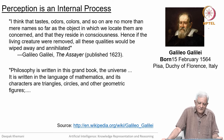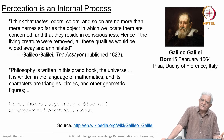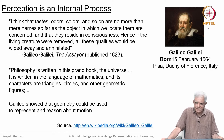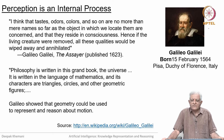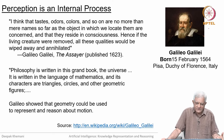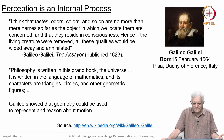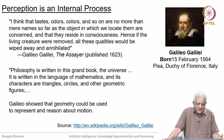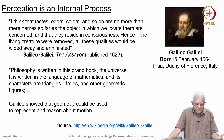Galileo said that philosophy — which in those days meant everything including science and maths — is written in this grand book, the universe. It is written in the language of mathematics, and its characters are triangles, circles and other geometric figures. He said that geometry could be used to represent and reason about motion.